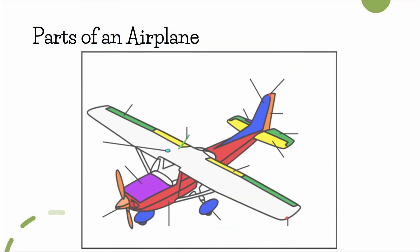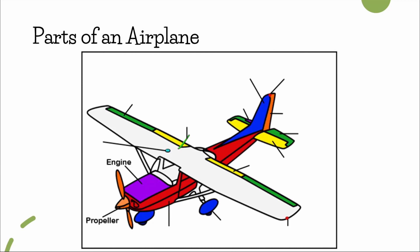For this video, I will be using this model of a Cessna to explain these components. Let's start at the head of the plane, which consists of two parts, the engine and the propeller.